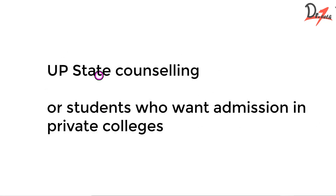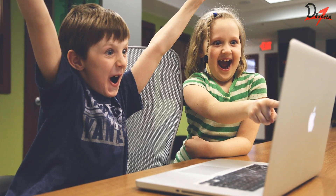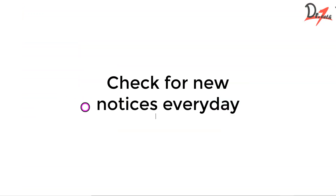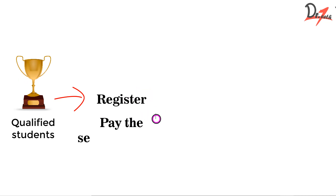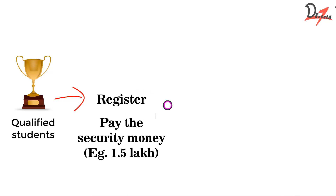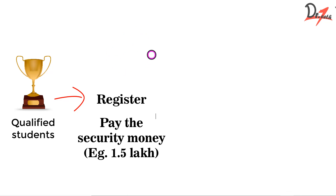This is specially applicable for UP state counseling and students wanting admission in private colleges. Once you have passed, keep checking the notice board. You will get the dates for registration of the counseling. Register and pay the security money online using your debit card or online banking. This money goes to the DGME, the body handling all counseling procedure. Last year it was 1.5 lakh — check for this year. The security money is refundable but with terms and conditions, which I will explain further.